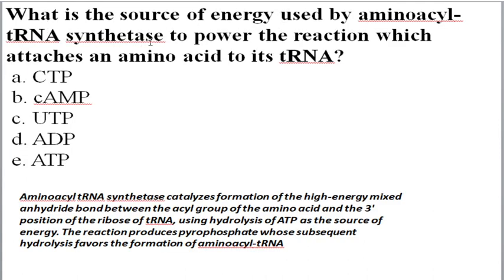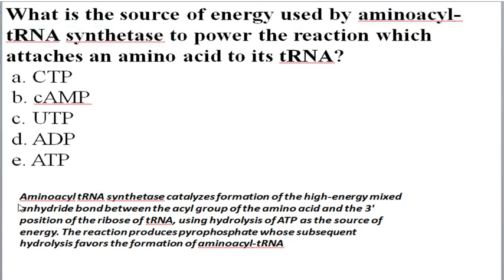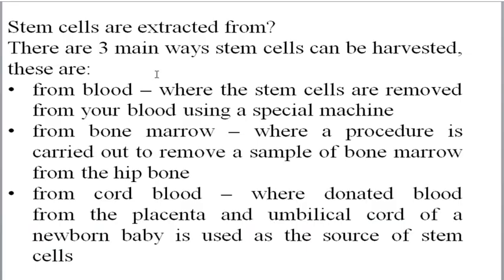What is the source of energy used by aminoacyl-tRNA synthetase to power the reaction that attaches the amino acid to its tRNA? Aminoacylation of tRNA is an important process asked every year. The source of energy is ATP, because aminoacyl-tRNA synthetase catalyzes the formation of the high-energy mixed anhydride bond between the acyl group of the amino acid and the 3' position of tRNA by using the hydrolysis of ATP.